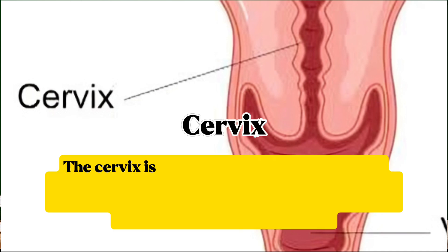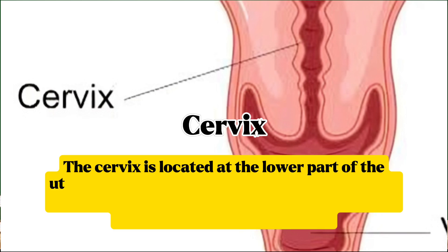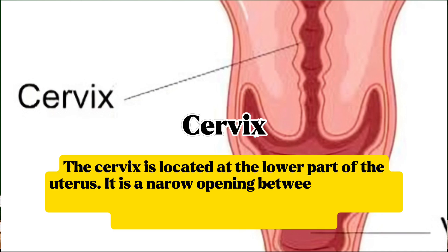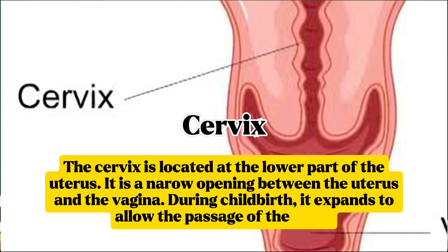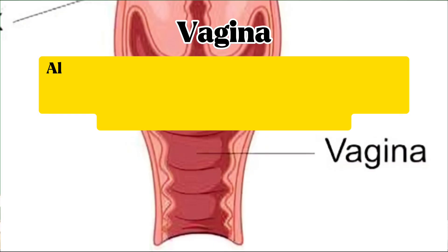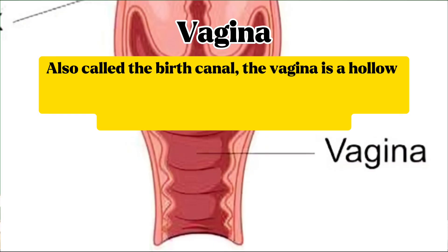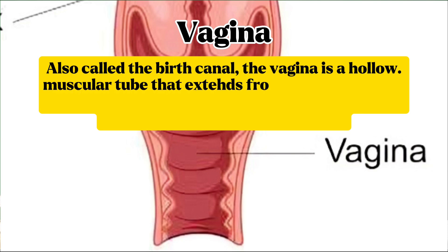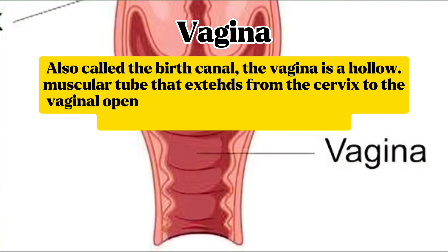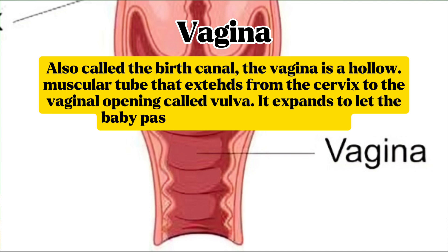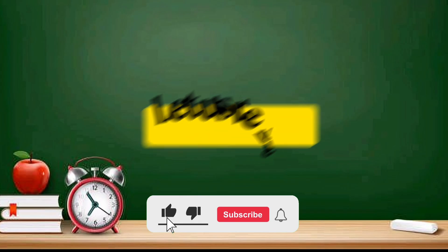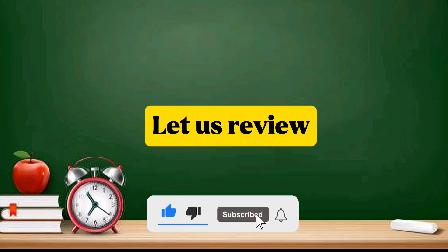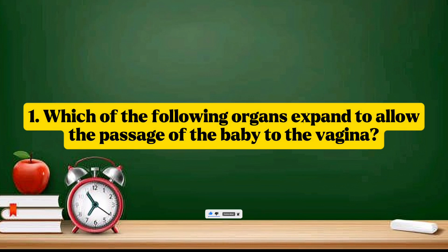Cervix: the cervix is located at the lower part of the uterus. It is a narrow opening between the uterus and the vagina; during childbirth it expands to allow the passage of the baby. Vagina: also called the birth canal, the vagina is a hollow muscular tube that extends from the cervix to the vaginal opening called the vulva. It expands to let the baby pass during normal delivery.